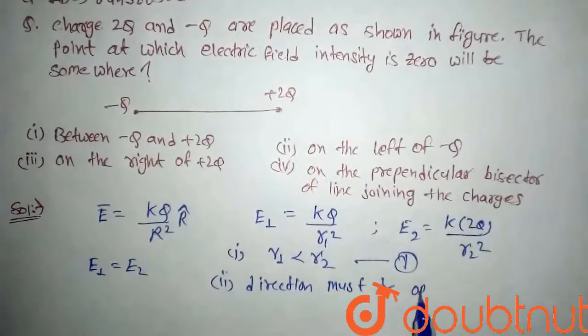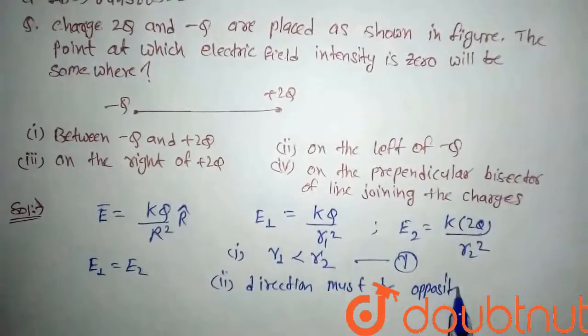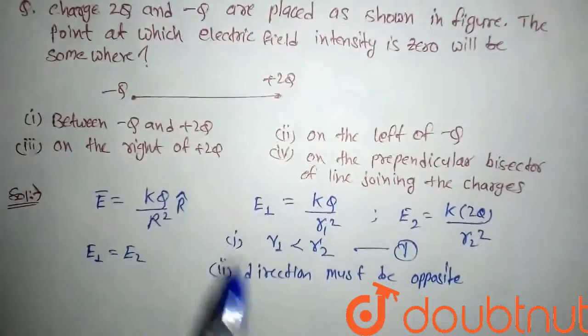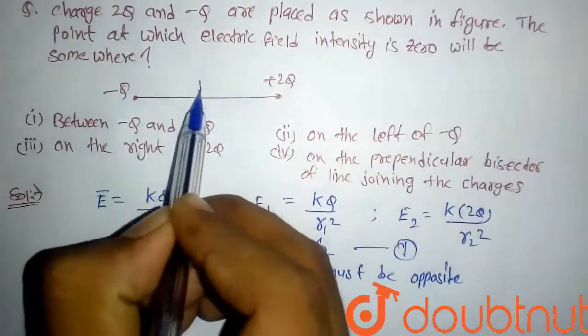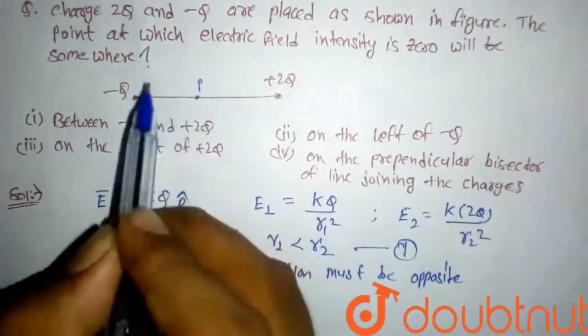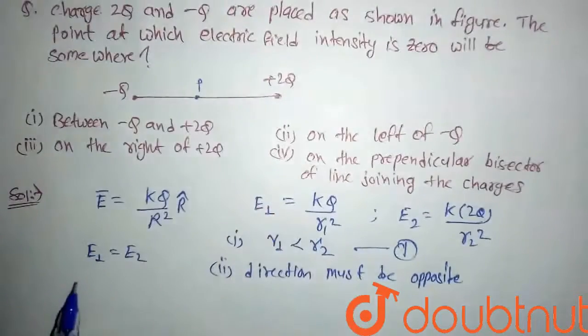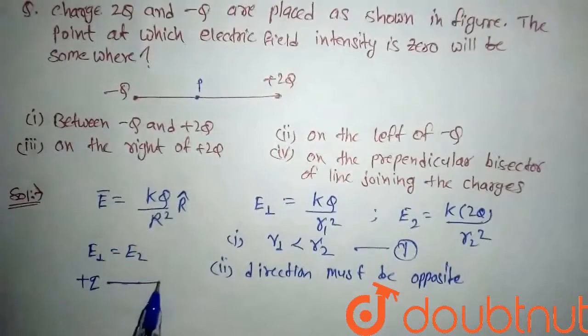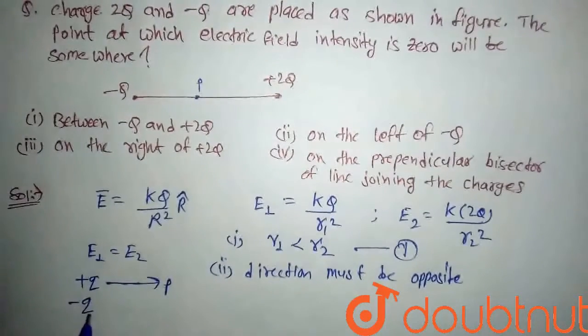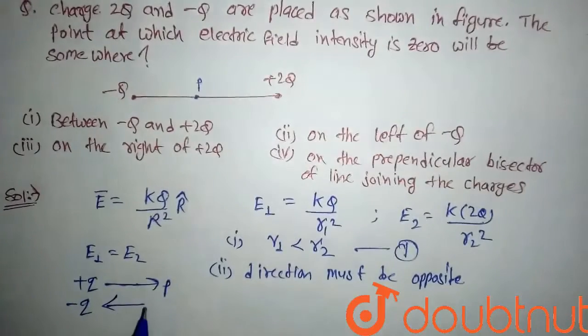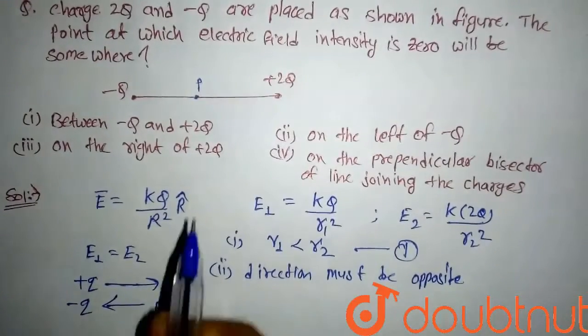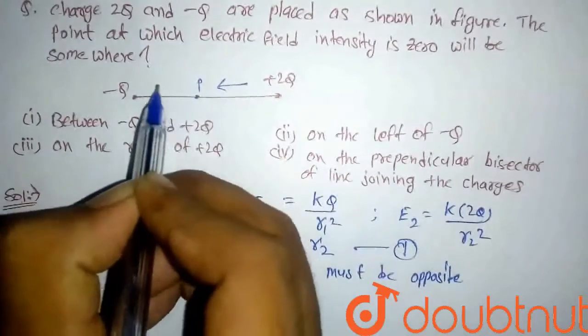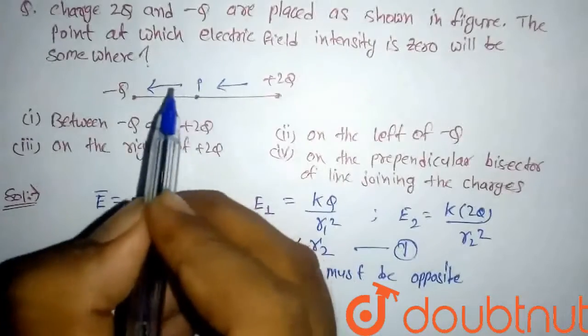The second condition is that direction must be opposite. By this we can find a point at which electrical intensity will be zero. So if we take a point here, first we will see direction. Direction due to plus charge is from source point to field point, and due to minus charge it is from field point to source point. Due to +2Q charge it will be in this direction, and due to -2Q charge it will be in this direction. So here direction will be same, so here can't be electric field zero.